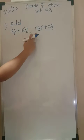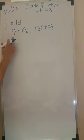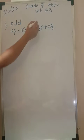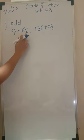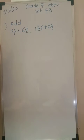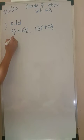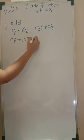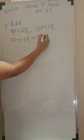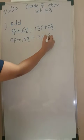Now see here, 9p and 13p — these two are like terms. The variable is p and the index is 1. So these two can be added. Similarly, 16q and 2q can be added. So if you are going to add these, you can write it as 9p plus 16q plus 13p plus 2q.